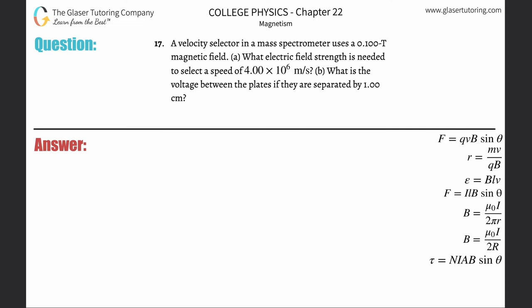Number 17: A velocity selector in a mass spectrometer uses a 0.1 Tesla magnetic field. Letter A: What electric field strength is needed to select a speed of 4 times 10 to the 6 meters per second?